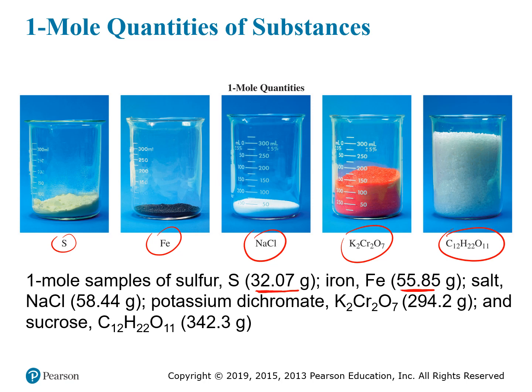For compounds, you look at the entire formula. Sodium chloride — adding the mass of sodium and chlorine — gives 58.44 grams per mole. For potassium dichromate, you add two potassiums, two chromium atoms, and seven oxygen atoms, giving 294.2 grams per mole. Sucrose, a large covalent molecule with 12 carbons, 22 hydrogens, and 11 oxygens, adds up to 342.3 grams per mole. Just like a dozen feathers weighs less than a dozen bricks, a mole of sulfur weighs much less than a mole of sucrose.